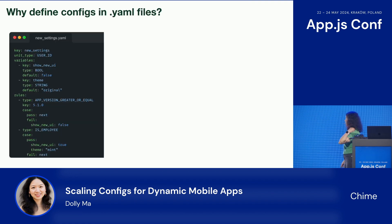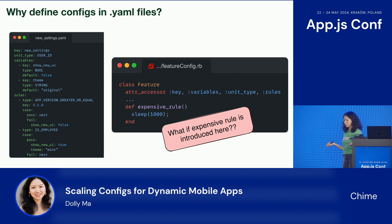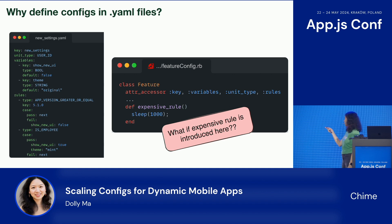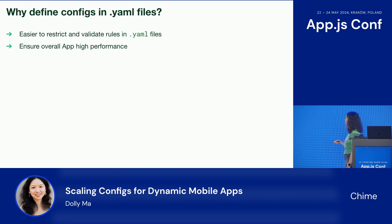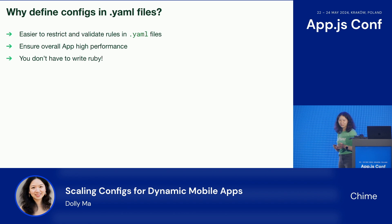Let's take a look at why we want to define the configs in YAML files rather than as a normal Ruby class. The problem is: what if an expensive rule is introduced? For example, a rule that just sleeps for a second. With YAML files, it's actually easier to restrict and validate the rules, which will ensure overall app performance. And the biggest win — you don't have to write Ruby. Hopefully I didn't offend any Ruby lovers here.